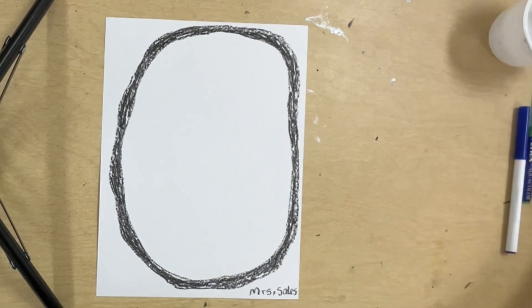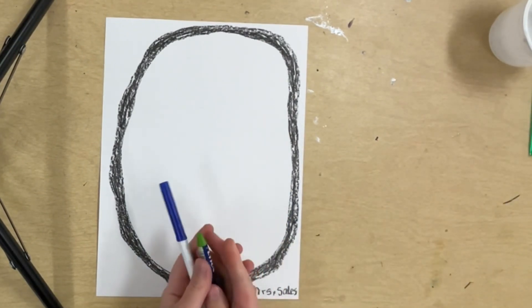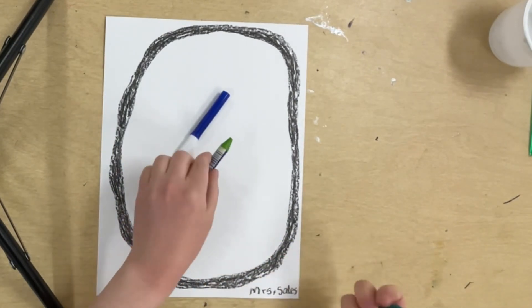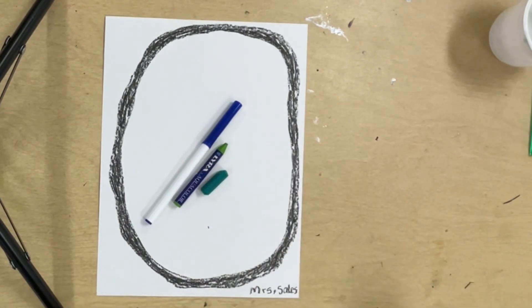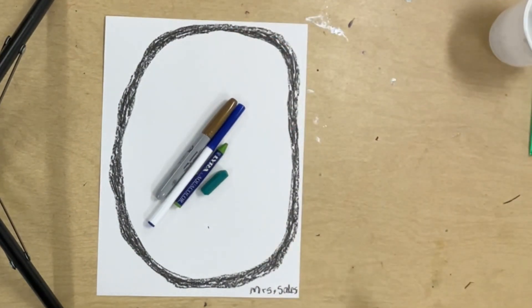Next I'm going to choose one marker, one watercolor crayon and one oil pastel in a color scheme that I like. And a color scheme is a group of colors that look really nice together. I'm also going to grab a metallic sharpie because that's just fun.